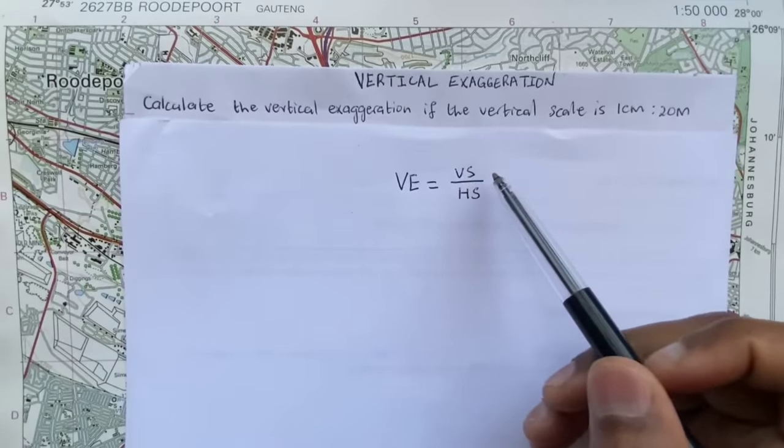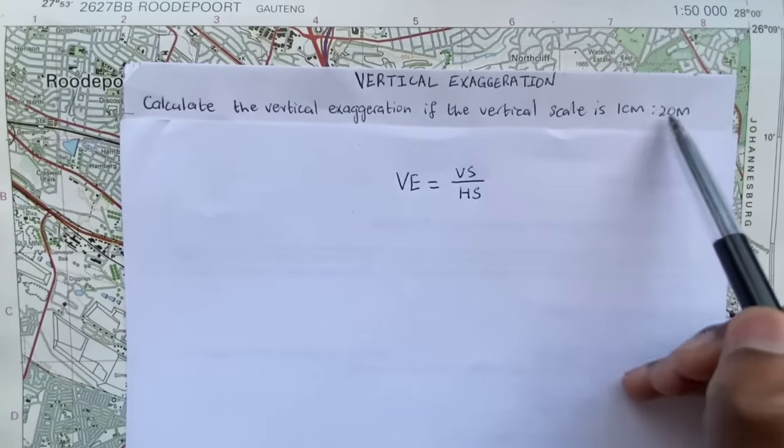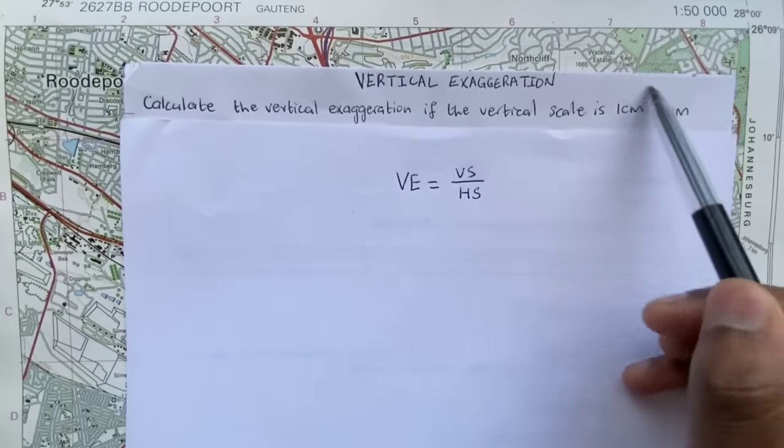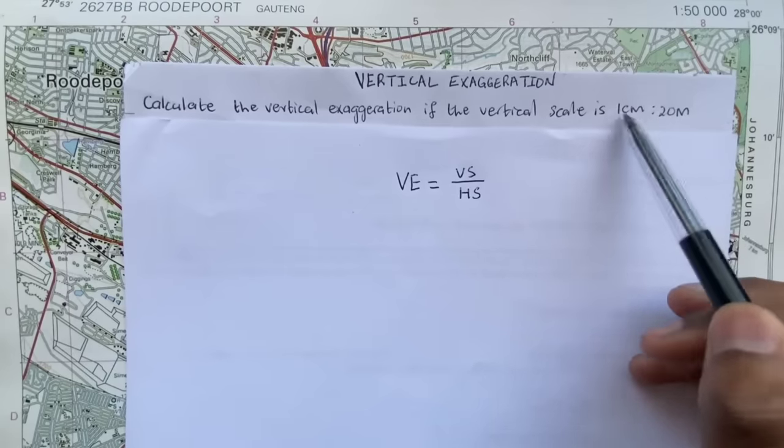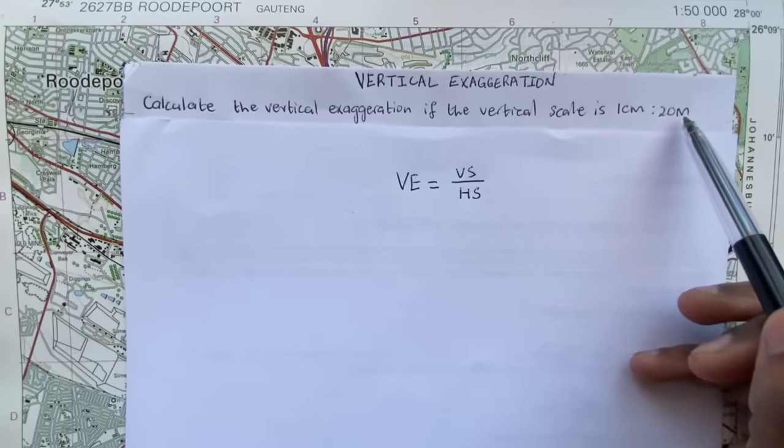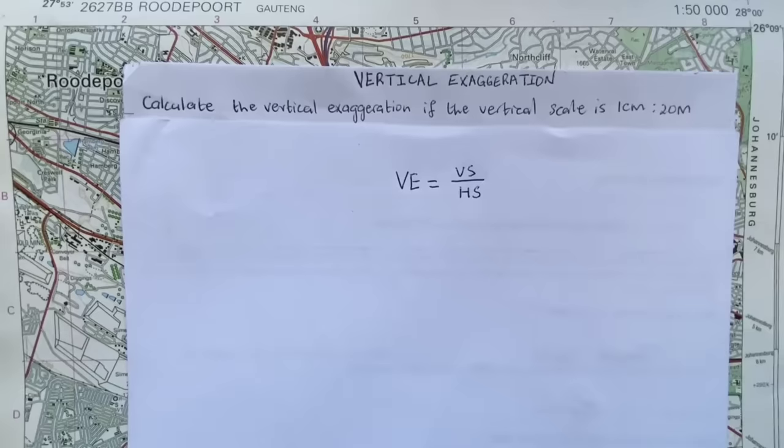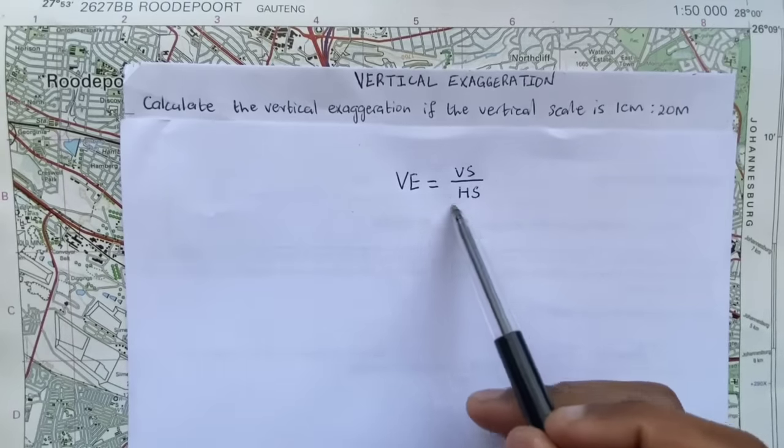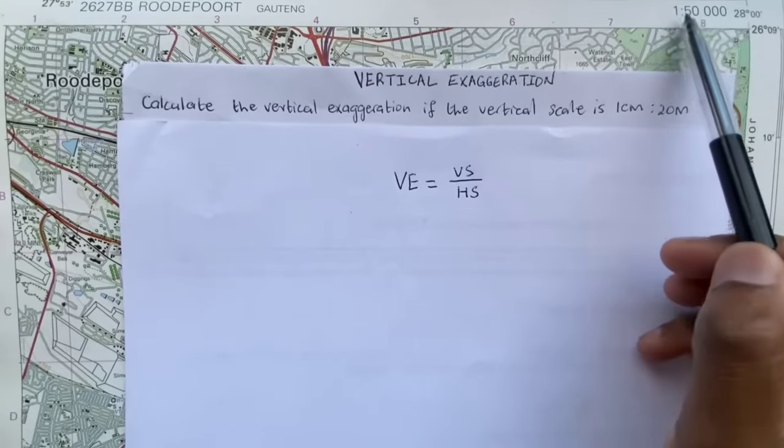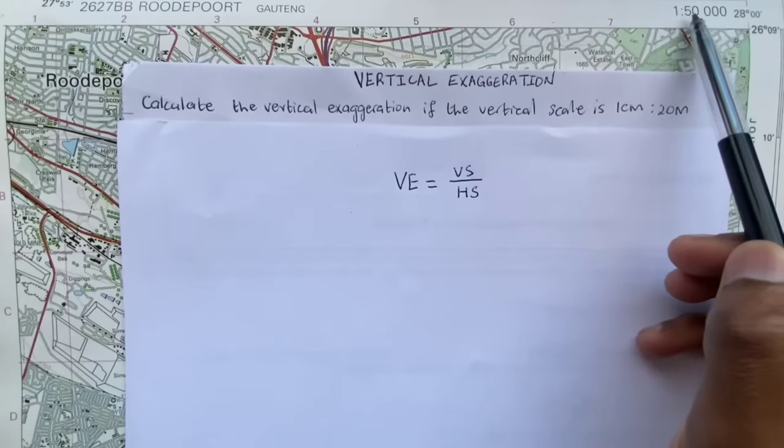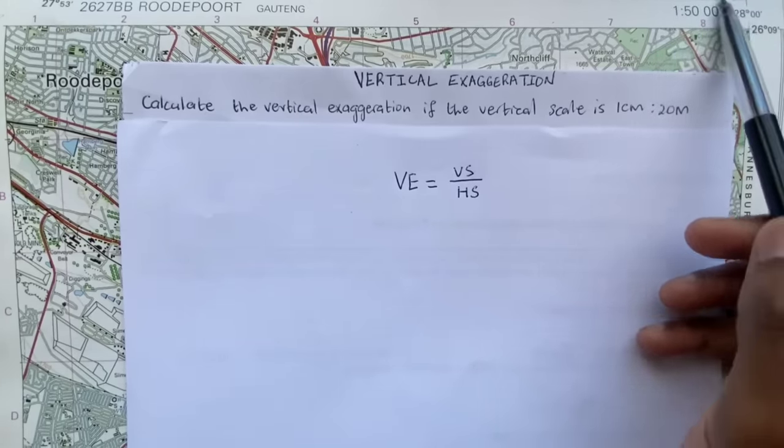So your VS is normally your vertical scale, which is the distance or the vertical distance which is represented by what is given here, which is one centimeter representing 20 meters. So it's your vertical distance from the ground. Whereas HS is your horizontal scale, which is normally the scale of the map.